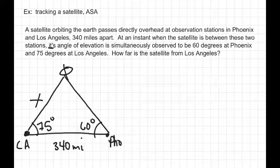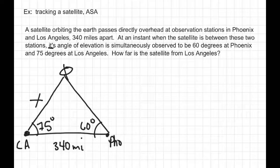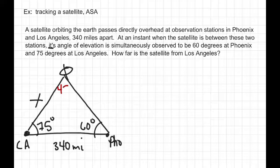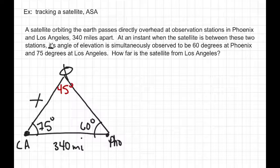Once we draw the triangle, notice that we know two of the three angles inside the triangle. If we know two of the three angles, we can find the third one by subtracting the other two from 180. So the angle by the satellite must be 180 minus 75 minus 60, which is 45 degrees. I need to find that because you can't use the Law of Sines unless you know an angle and the side opposite it. Now I know 45 degrees, and the side opposite is 340.